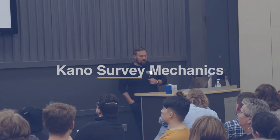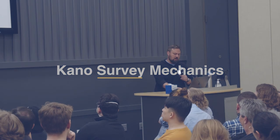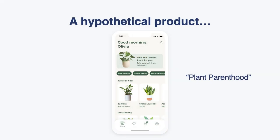So that's the concept of Kano. Now let's get further into how this actually happens — how do we go from an unprioritized roadmap of features to getting real signal on where features might fall into those categories? To do this, let's use a hypothetical product. Today is Earth Day, so let's use a mobile app you can use to order plants through — let's call it Plant Parenthood.